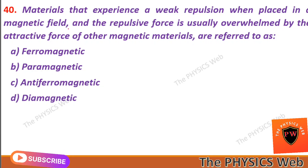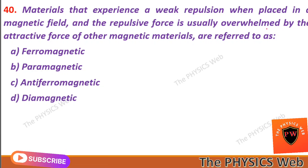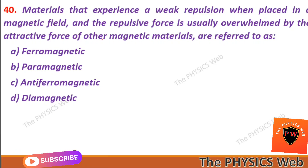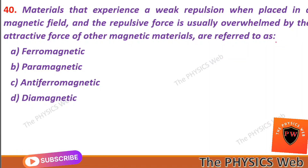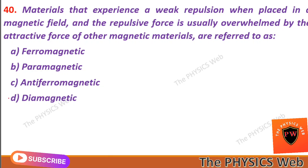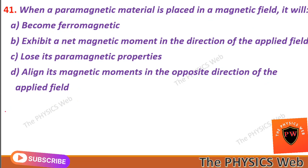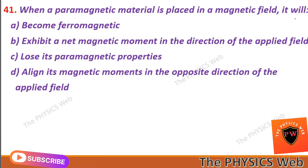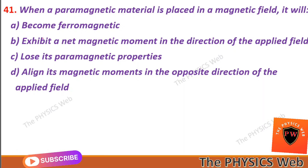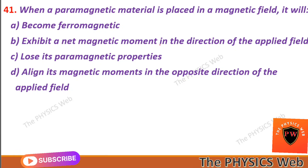Next, question forty: materials that experience a weak repulsion when placed in a magnetic field — and the repulsive force is usually overwhelmed by the attractive force of other magnetic materials — are referred to as diamagnetic materials. So D is your correct option. Question forty-one: when a paramagnetic material is placed in a magnetic field, it will exhibit a net magnetic moment in the direction of the applied field. So B is your correct option.